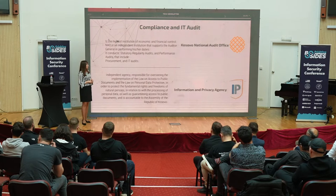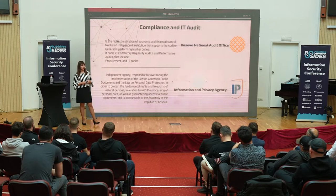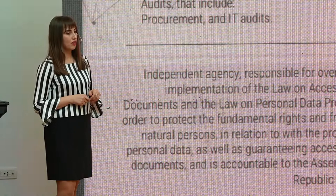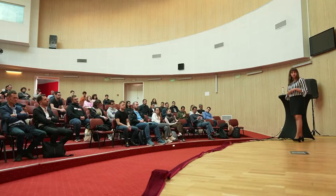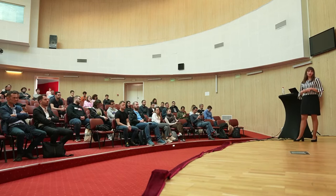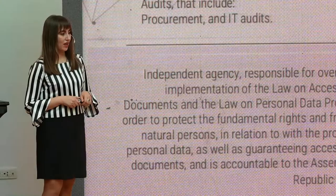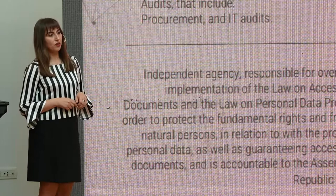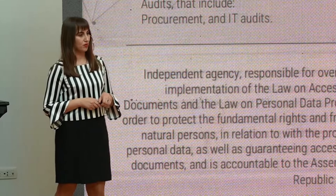The Kosovo National Audit Office is an independent office that responds to the Assembly of Kosovo and is the biggest institution for economic and financial control, conducting IT audits and other kinds of audits. The Agency for Information and Privacy also responds to the Assembly of the Republic of Kosovo and is an independent agency whose mission is to implement and control the implementation of the law on access to public documents and the law on personal data protection.